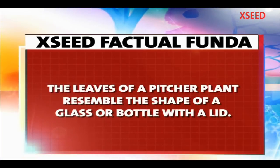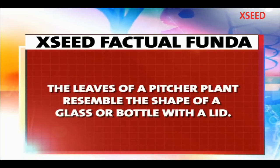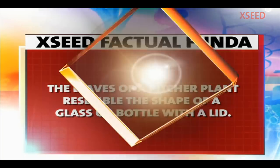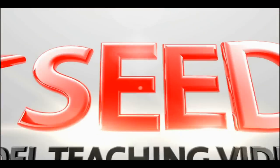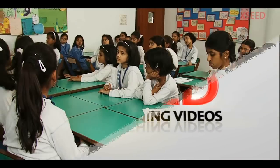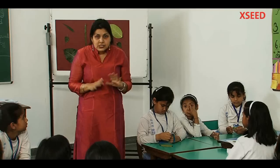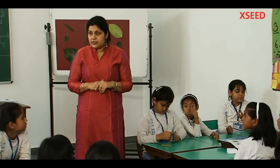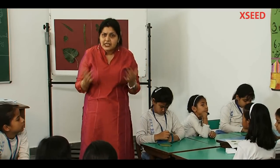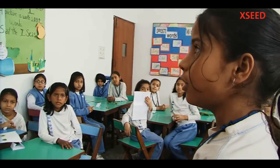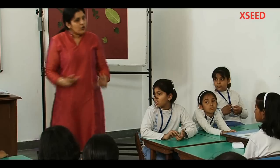The leaves of a pitcher plant resemble the shape of a glass or bottle with a lid. Now that we know there are different kinds of leaves, do you think the difference in the leaves helps the plant in any way? It makes it beautiful.